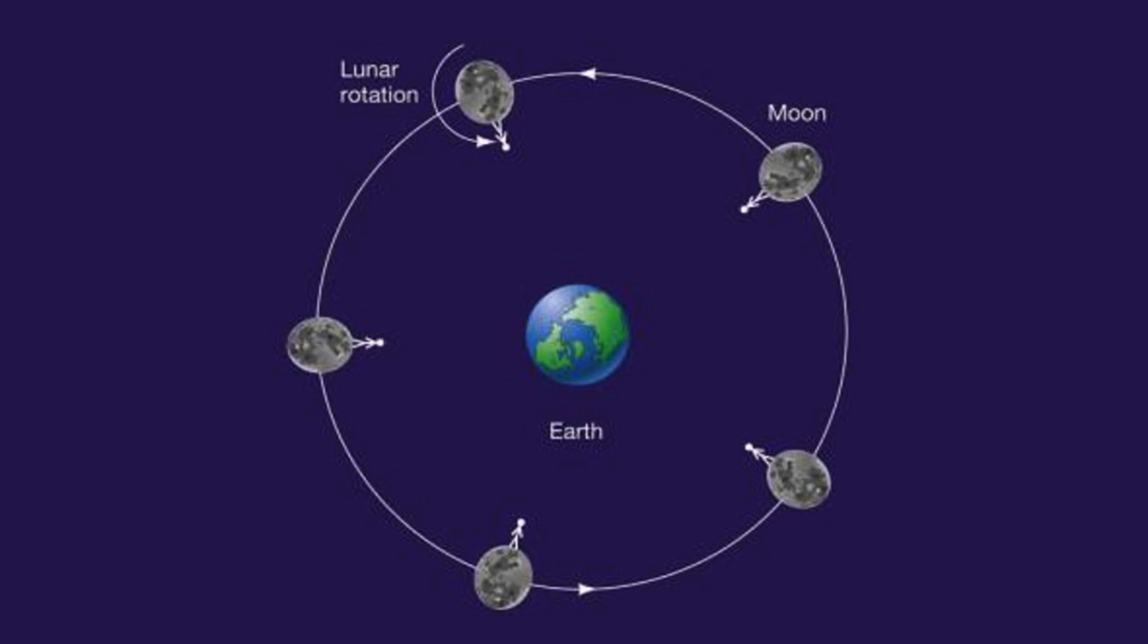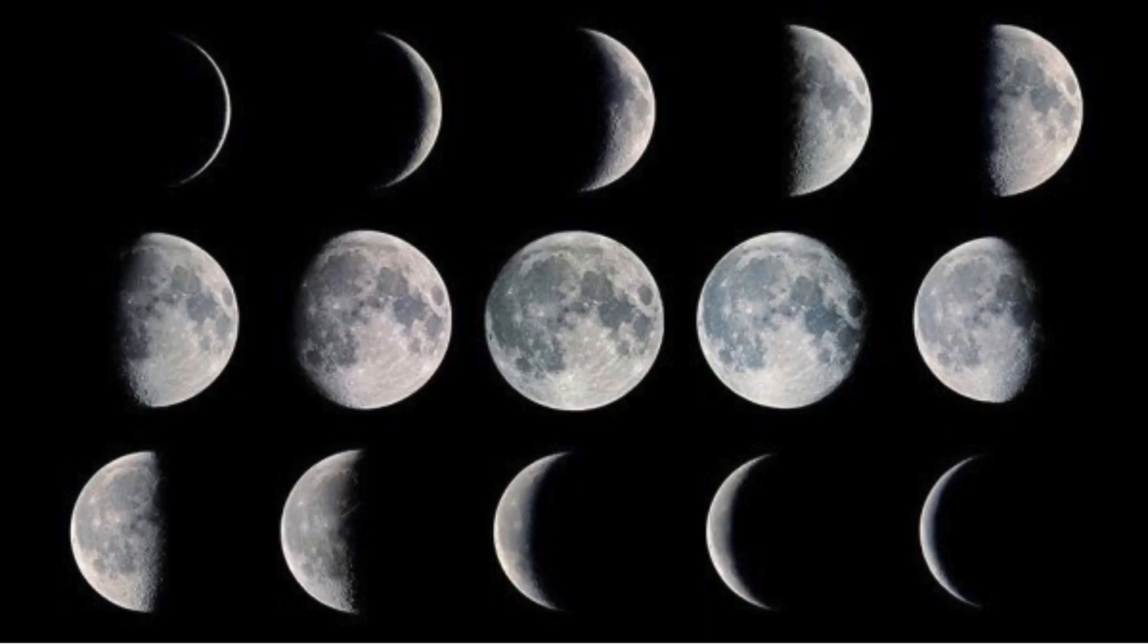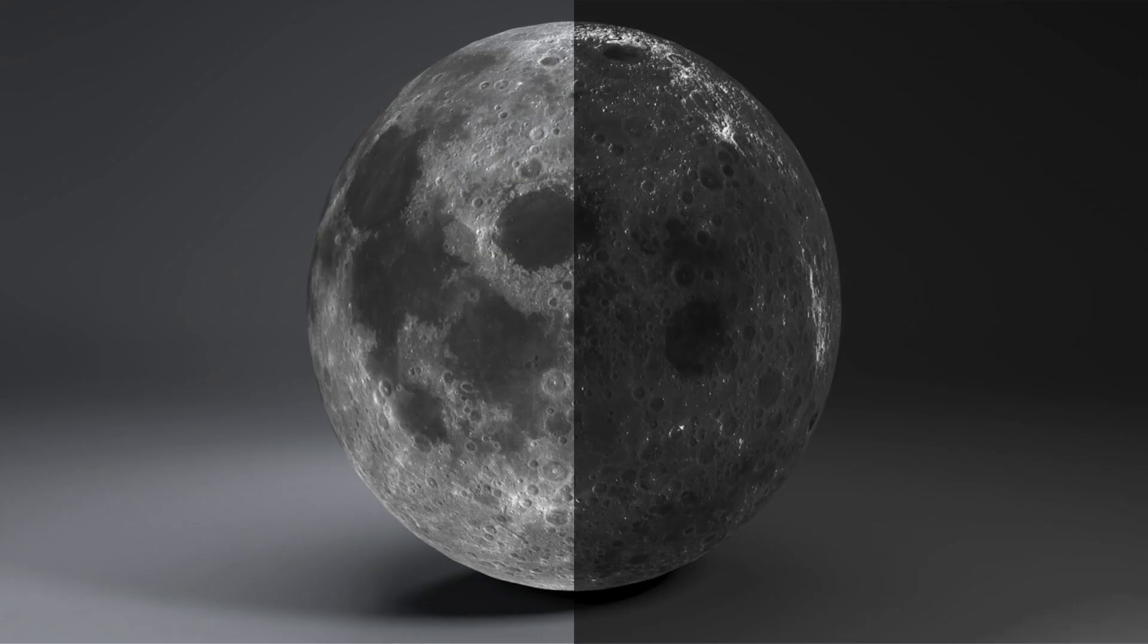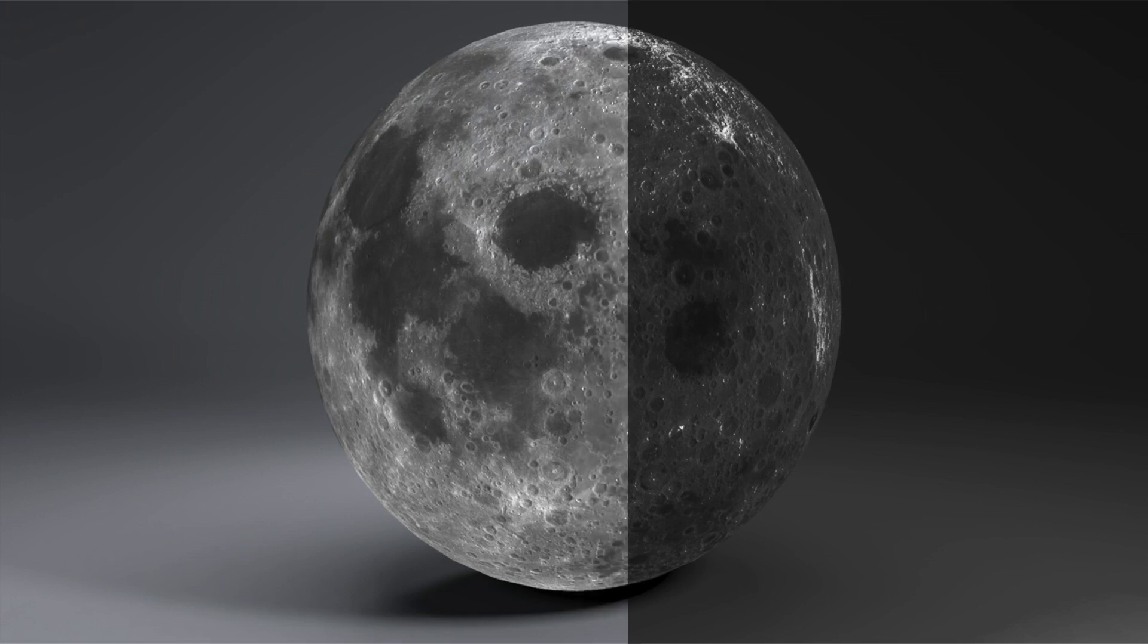The moon is tidally locked to the Earth. Night after night, the same face of the moon is visible from Earth. This means that only 50% of the moon is visible from Earth, right? Not right. In total, 59% of the moon is visible from Earth over time. How is this possible?